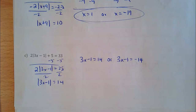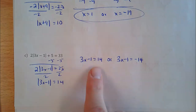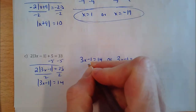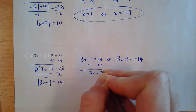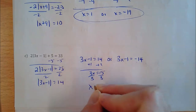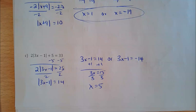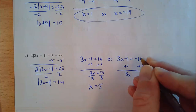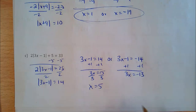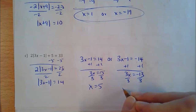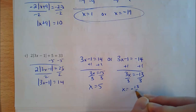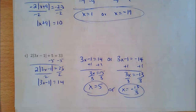If it equals 14, add 1 to both sides: 3x equals 15, then divide by 3. On the right equation, add 1 to both sides to get negative 13. Both answers work.